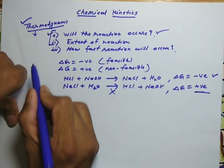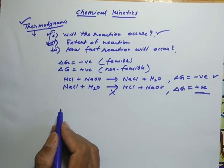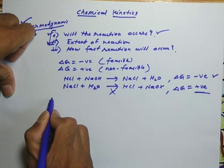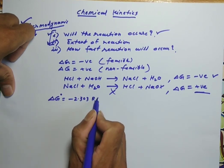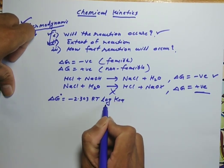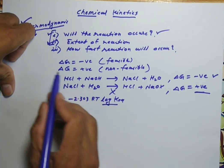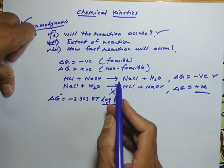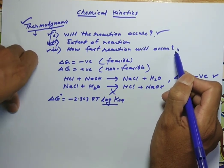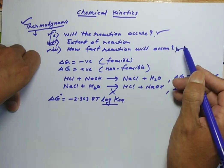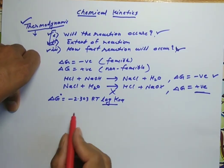The extent of reaction is also explained by thermodynamics using the equilibrium constant, which is related to standard Gibbs free energy by: delta G° = -2.303 RT log K. From this we can calculate the extent of the reaction. However, the third parameter — how fast the reaction will occur — is not explained by thermodynamics. This is explained by the new branch called chemical kinetics.